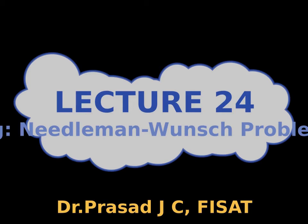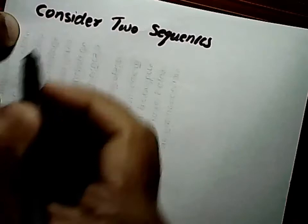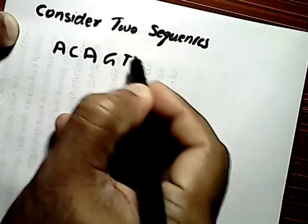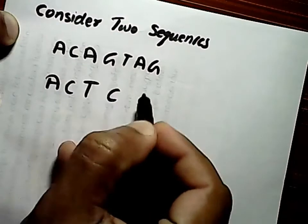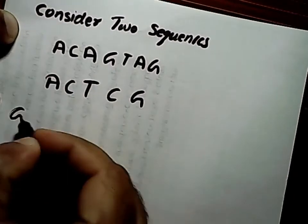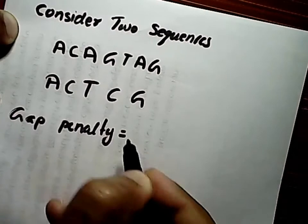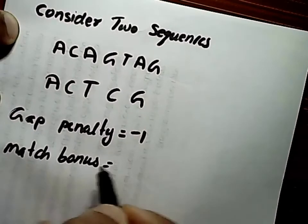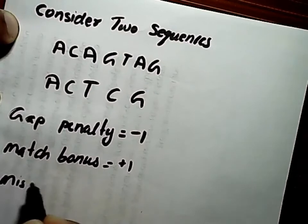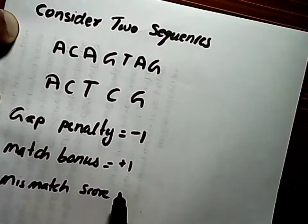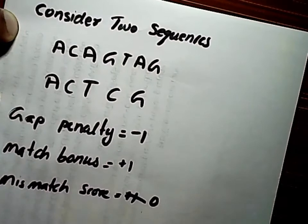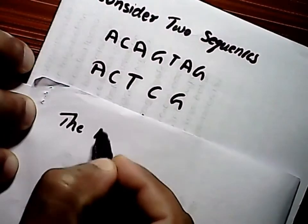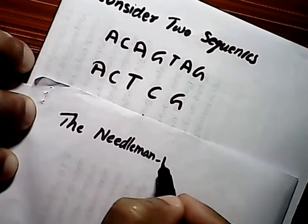In this class we are going to discuss a problem on the Needleman-Wunsch algorithm using dynamic programming. Consider two sequences ACAGTAG and ACTGCG. The gap penalty value is minus one, match bonus value is plus one, and mismatch score value is zero. Now let us see how the Needleman-Wunsch algorithm can be used to solve the matching values.